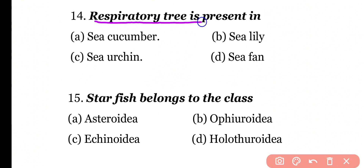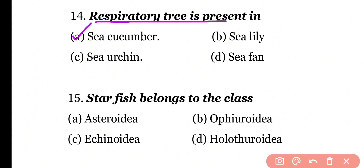Question 14: Respiratory tree is present in sea cucumber, sea lily, sea urchin, or sea fan? Correct answer is Option A. The respiratory tree acts as an organ for gaseous exchange and excretion in sea cucumber. Sea cucumber belongs to class Holothuroidea.